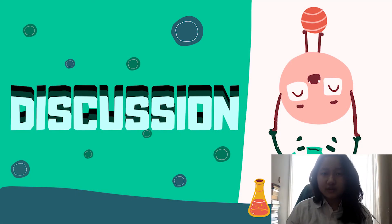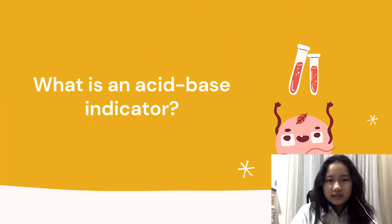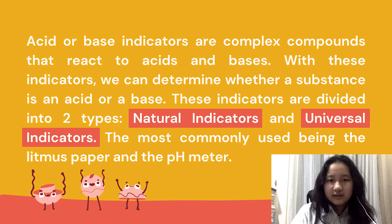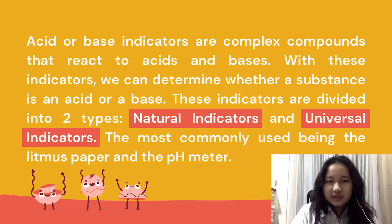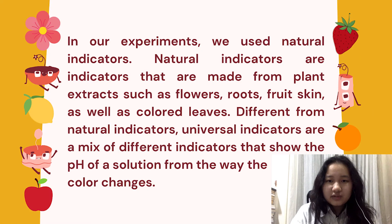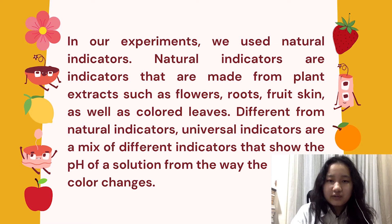Now, let's move on to our discussion about acid-base indicators. What is an acid-base indicator? Acid or base indicators are complex compounds that react to acids and bases. With these indicators, we can determine whether a substance is an acid or a base. These indicators are divided into a few types: natural and universal indicators, with the most commonly used being the litmus paper and the pH meter. In our experiments, we use natural indicators, which are made from plant extracts such as flowers, roots, fruit skin, as well as colored leaves. Universal indicators are a mix of different indicators that show the pH of a solution from the way the color changes.